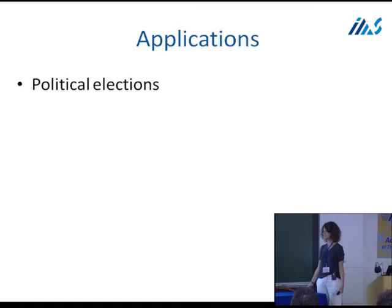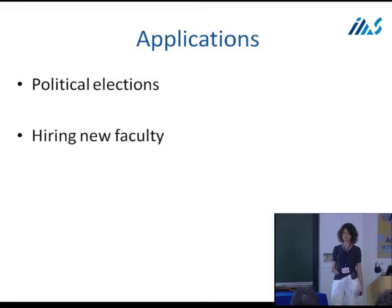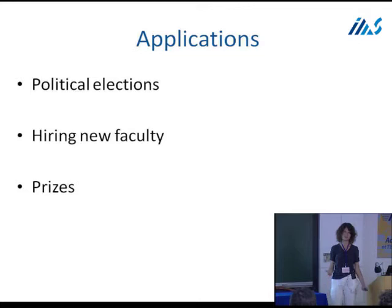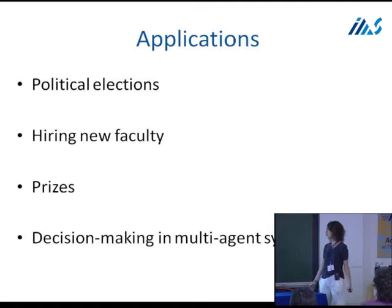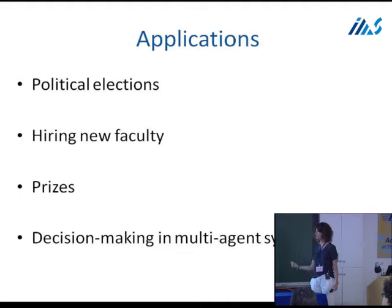Why would we care about voting? One obvious answer is political elections, but applications are not limited to that. Other examples include hiring new faculty - tenured professors vote over who to make an offer to, or whom to shortlist. Nominations and selection for prizes can also be done by voting. These examples don't necessarily involve huge numbers of voters - faculty hiring may have 10 or 15 voters, even less with just a hiring committee. In multi-agent systems, intelligent agents could make collective decisions by voting over alternatives, and there's hope this is how things will be done in the future.